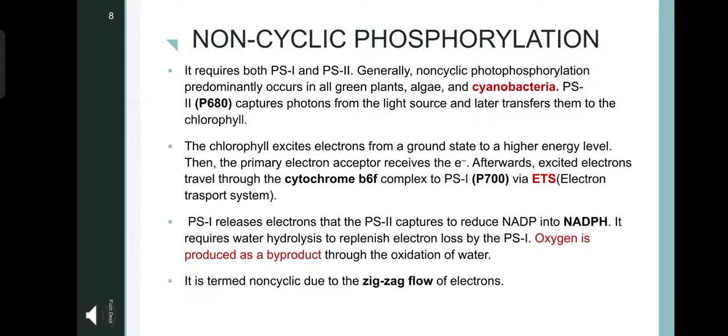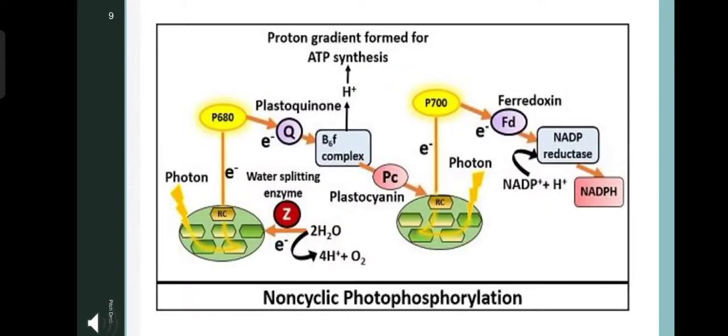The pigment system 1 releases the electrons that the pigment system 2 captures to reduce the NADP into NADPH. It requires water hydrolysis to replenish electron loss by the pigment system 1. Oxygen is produced as a byproduct through the oxidation of water, and hence it is termed as non-cyclic because of the zigzag flow of electrons. The electron excited from pigment system 1 is used to reduce NADP plus into NADPH, whereas the loss of electron by the pigment system 1 is filled by the excited electron coming from the pigment system 2, whereas in pigment system 2, the loss of electron is gained by the hydrolysis of water.